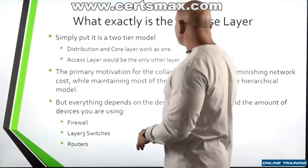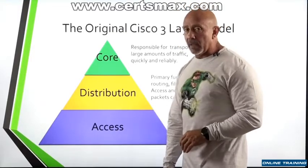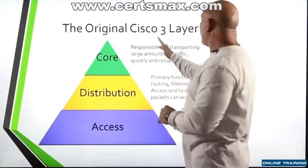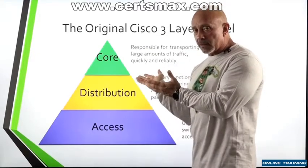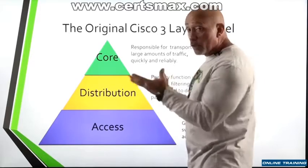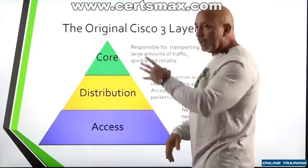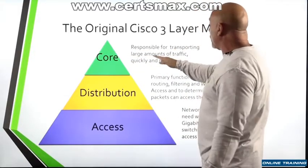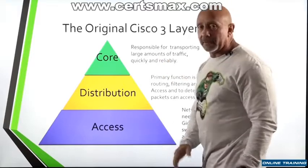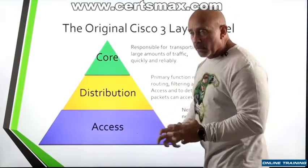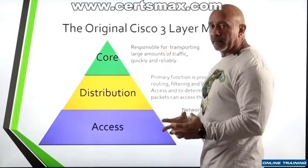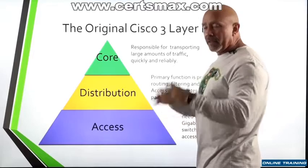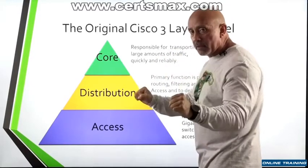Let's go back in time and take a look at our three-layer model. This is the original Cisco three-layer model — we know this from our CCNA, the 200-120 and before. The core layer is responsible for transporting large amounts of traffic quickly and reliably. That is its job. You have beefy routers on there sending stuff across with big pipes, and no access lists — everything there is just to send information across.